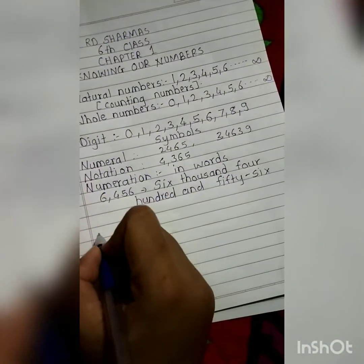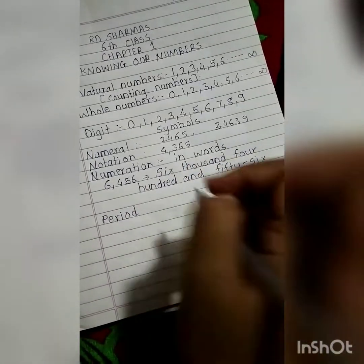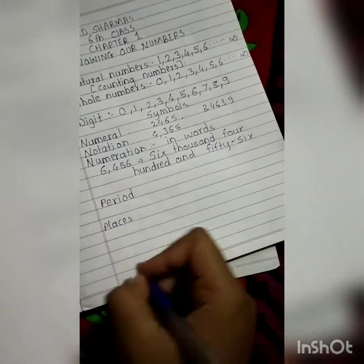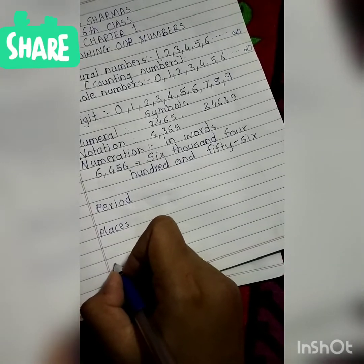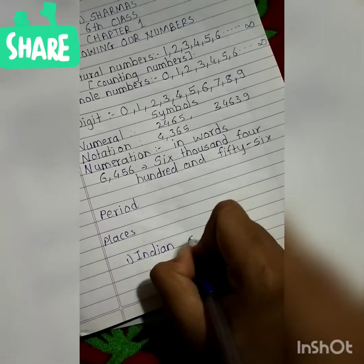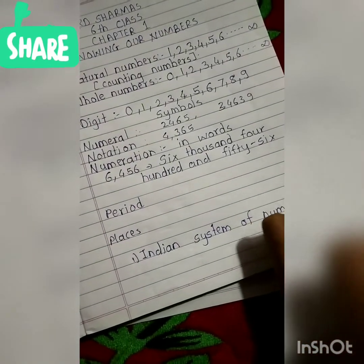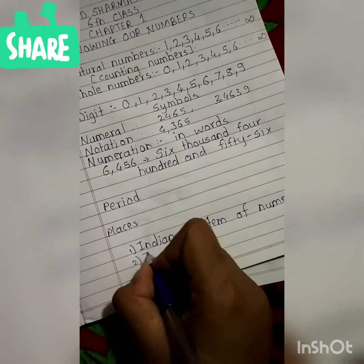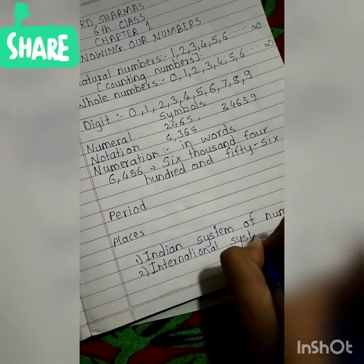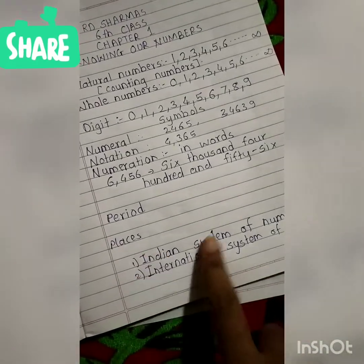Whenever you are writing a number, you will see periods. So we have periods and places. Numbers can be written in the form of two systems: first is the Indian system of numeration and second is the international system of numeration.